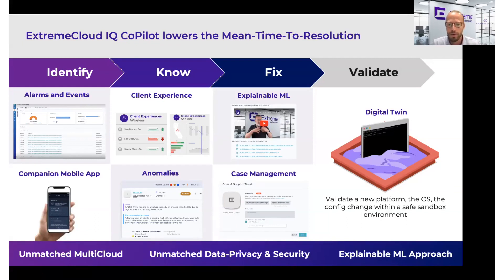Once you've identified an issue, Copilot helps you know what's actually happening. There is explainable machine learning built in that allows you to know where the problem is — whether it's based on a certain location, a certain client, or a particular access point. The machine learning informed anomalies will help describe that to you, for example, that you've got an AP nearing its wireless capacity on a particular channel with a lot of clients, and that you might want to check your data rate configurations. It pinpoints and explains exactly where the problem is.